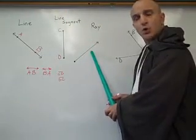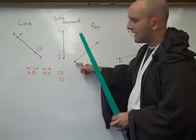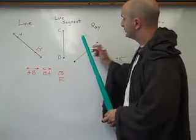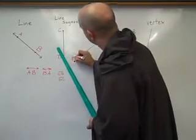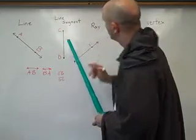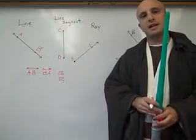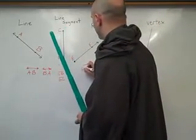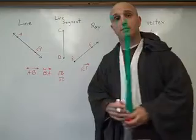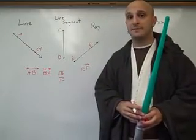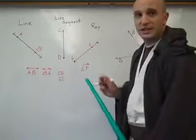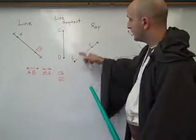This is a ray. We know it's a ray because it has an endpoint and an arrow on the other end. This would be ray EF. However, it is not ray FE because when you name a ray, you have to name it in the direction that the arrow is pointing. EF.